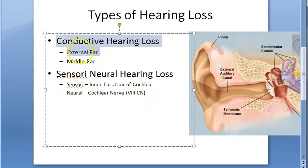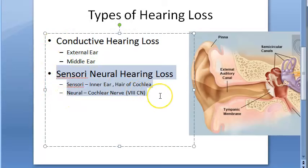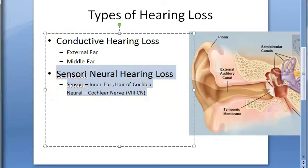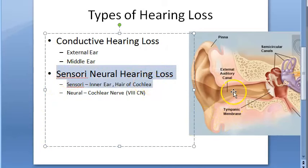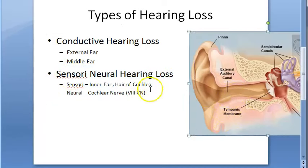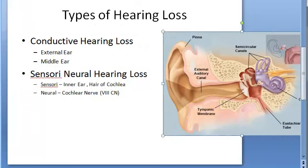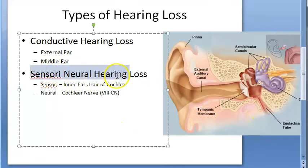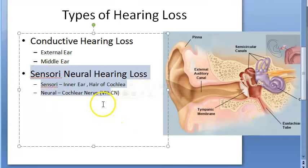Now let's look at sensorineural hearing loss. It can also be congenital — they may not have a proper inner ear or may have improper nerve development. There are also acquired causes. What do you think the acquired causes of sensorineural hearing loss would be?